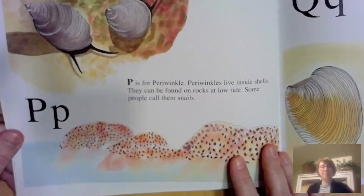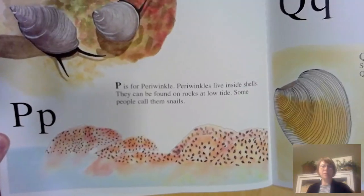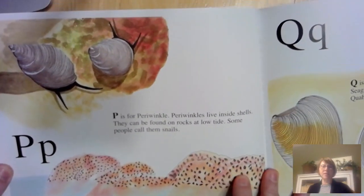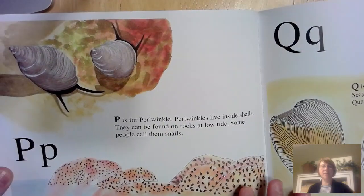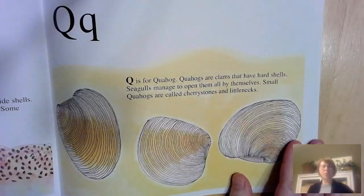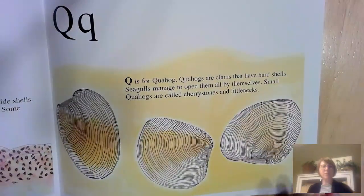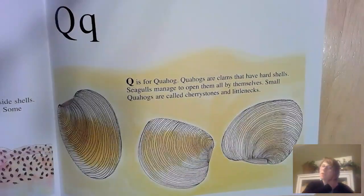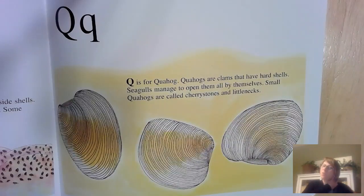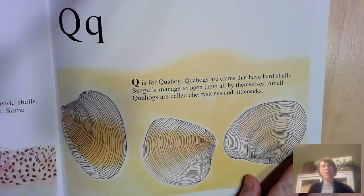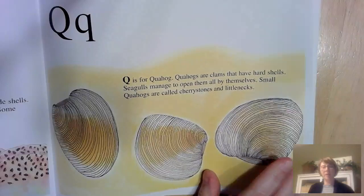P is for periwinkle. Periwinkles live inside shells. They can be found on rocks at low tide. Some people call them snails. Q is for quahogs. Quahogs are clams that have hard shells. Seagulls manage to open them all by themselves. Small quahogs are called cherry stones and little necks.